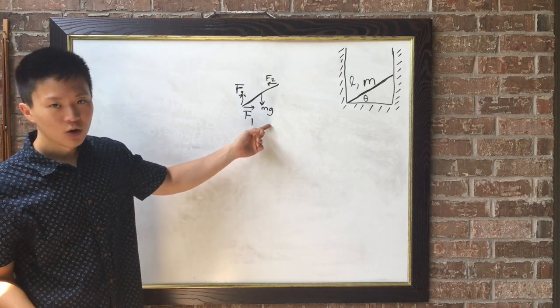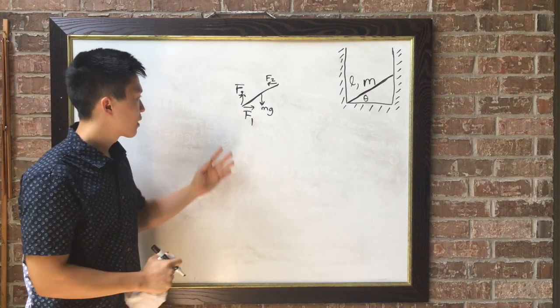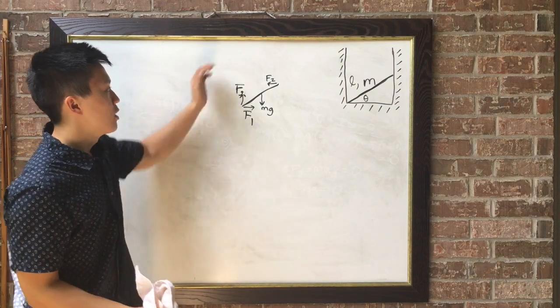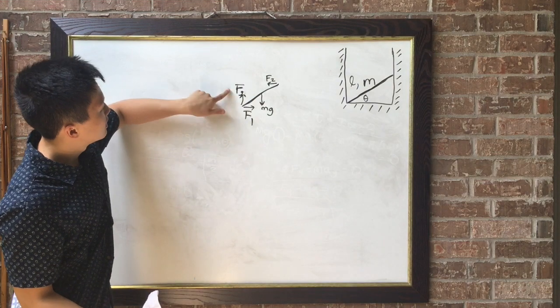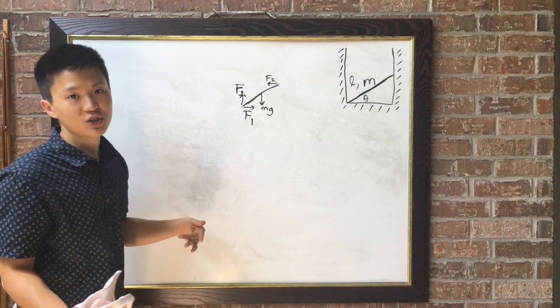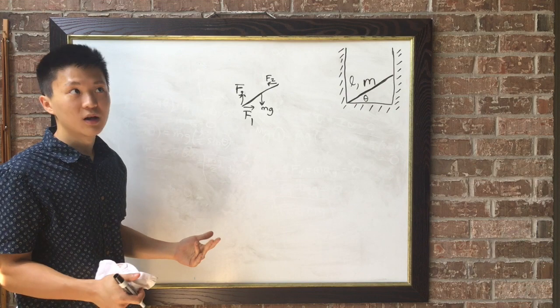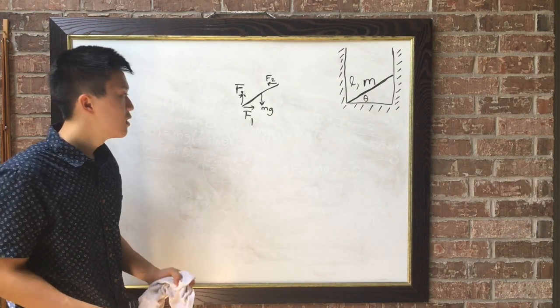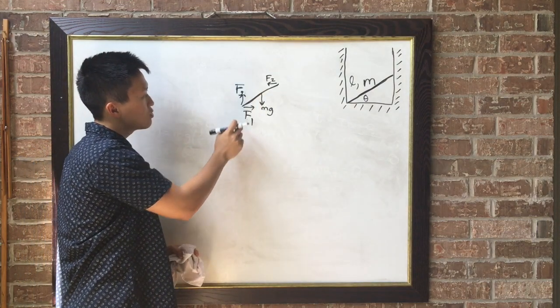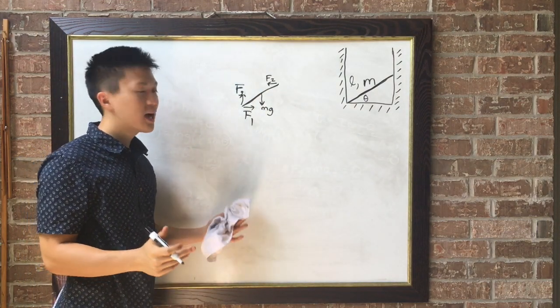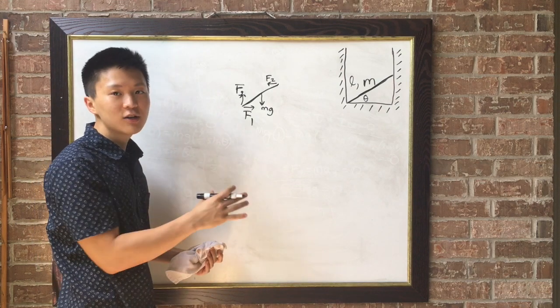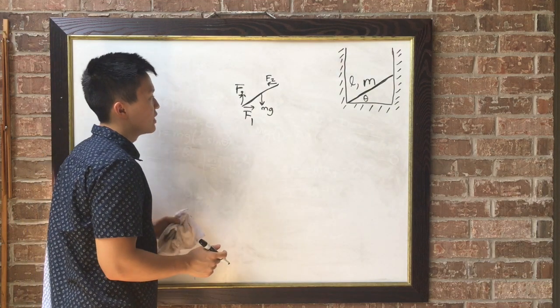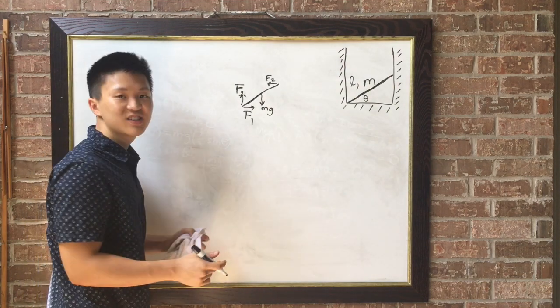So notice mg is a known force, and we know its quantity since m is given, and so is g. But F sub 2, F sub g, and F sub 1, I don't know the quantities or values of those forces yet. So since we have three unknowns, I think we'll want to have three equations. However many unknowns you have, you're going to want that many equations. So first what I want to do is use Newton's second law, F equals ma, for the y-direction.